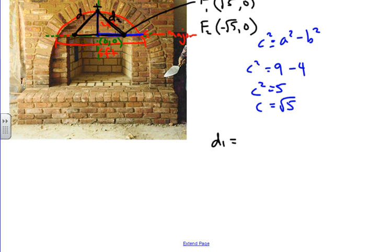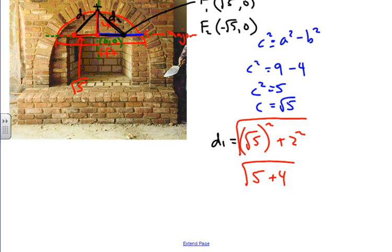D1 equals, since right here, from here, the foci to the center is a square root of 5, we'll have the square root of 5 squared using the Pythagorean theorem. And then we have this distance which is going to be 2 plus 2 squared. We're going to take the square root of that. So we have 5 plus 4, which would be the square root of that, which would equal the square root of 9. So distance 1 is equal to 3. This distance is 3.